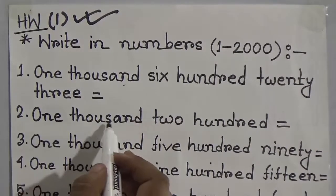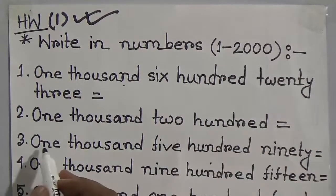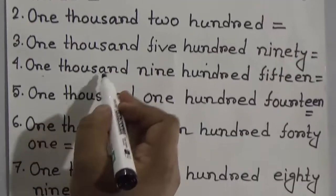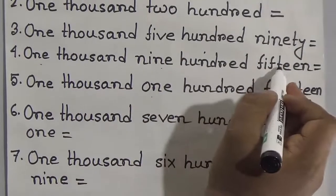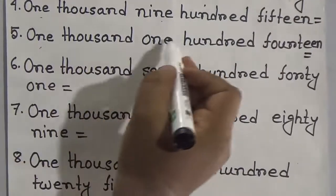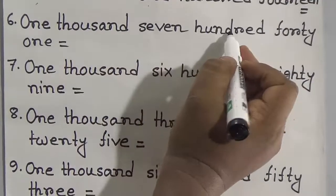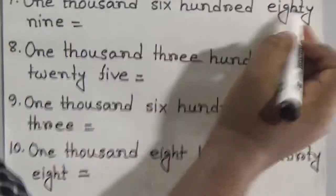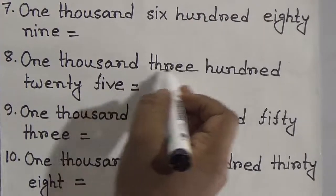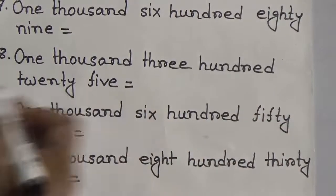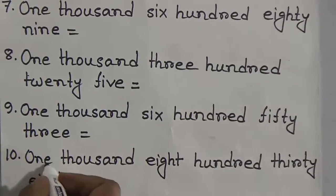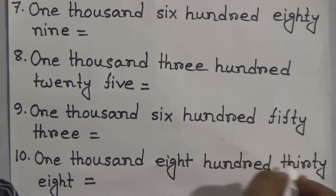The seatwork numbers are: 1,741, 1,689, 1,325, 1,653, 1,800, and 1,838.